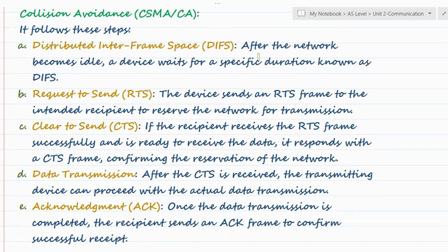Then comes Collision Avoidance, which involves the following steps. First: Distributed Inter-Frame Space, DIFS. After the network becomes idle, a device waits for a specific duration known as DIFS. This is because multiple devices may be sensing whether the line is free, and as soon as it is free, they might all start sending at once, causing a collision. To avoid this, once the line becomes idle, each waiting device waits for a specific duration before sending, rather than starting immediately.